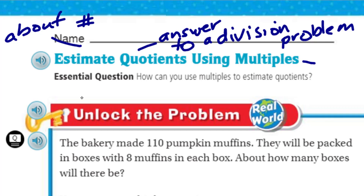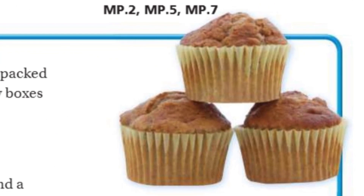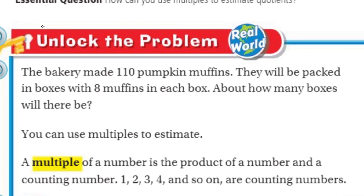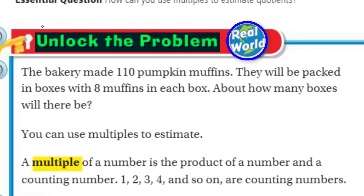It's like guessing how much you think it is. Like sometimes at the fair they'll have a big jar filled with all these candies, and they say if you can guess how many candies are in this jar, you win it. So you have to kind of estimate how many you think are in the jar. Anyway, this problem has something to do with one of my favorite foods — that's right, muffins. I love blueberry muffins. I love any kind of muffin, really. It is my weakness. A muffin with a cup of coffee? Life is good. But first, we can't do any of that until we unlock the problem — because it's real world, baby.